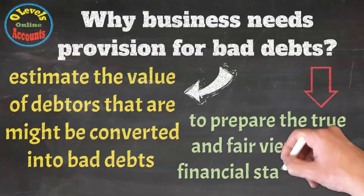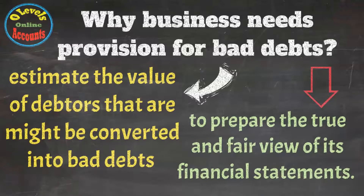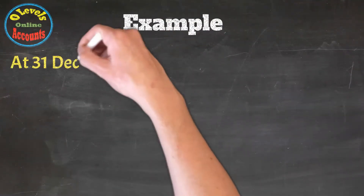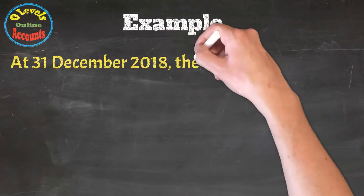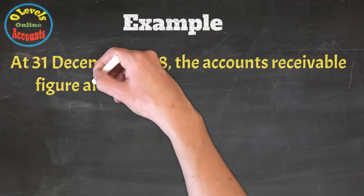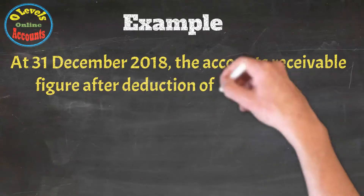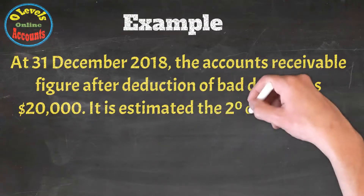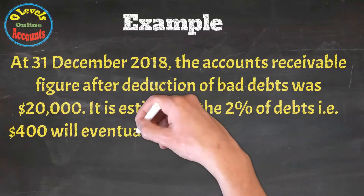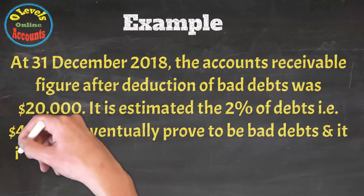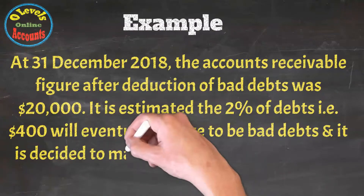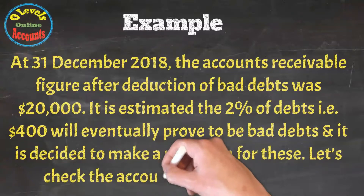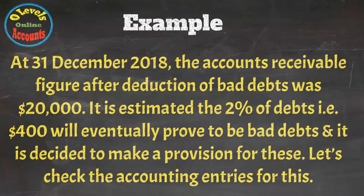Let's have an example to understand the practical treatment. At 31 December 2018, the accounts receivable figure after deduction of bad debts was $20,000. It is estimated that 2% of debt — that is $400 — will eventually prove to be bad debts, and it is decided to make a provision for these.